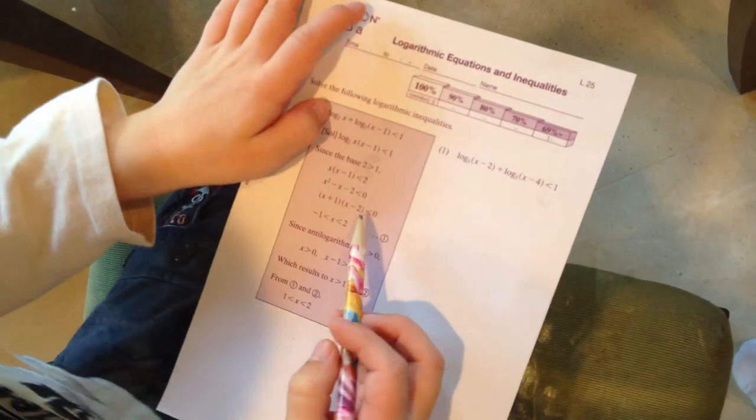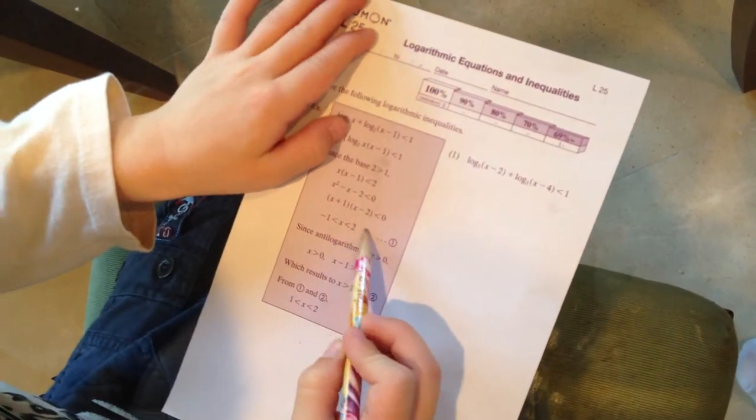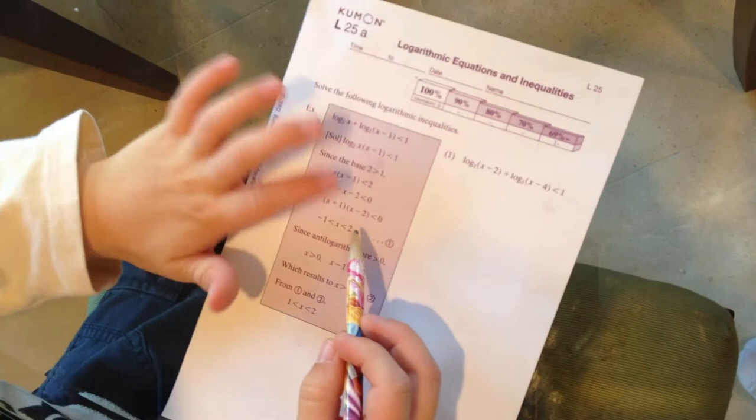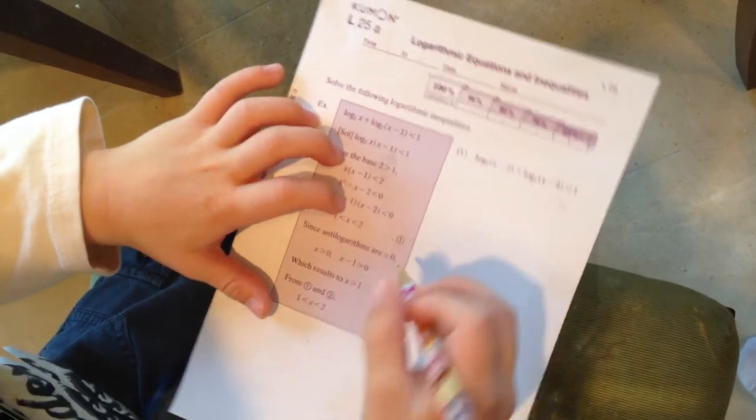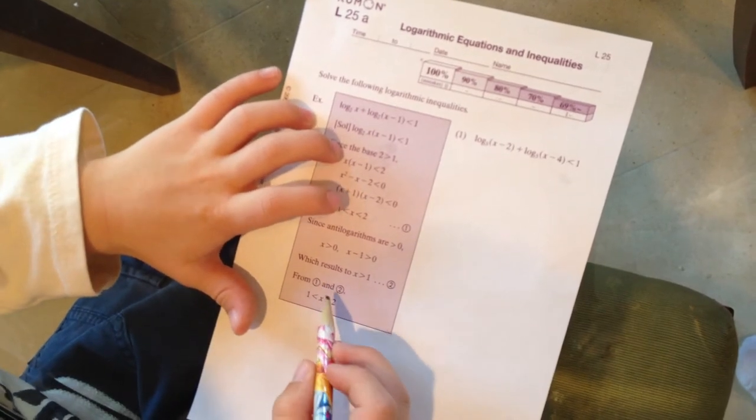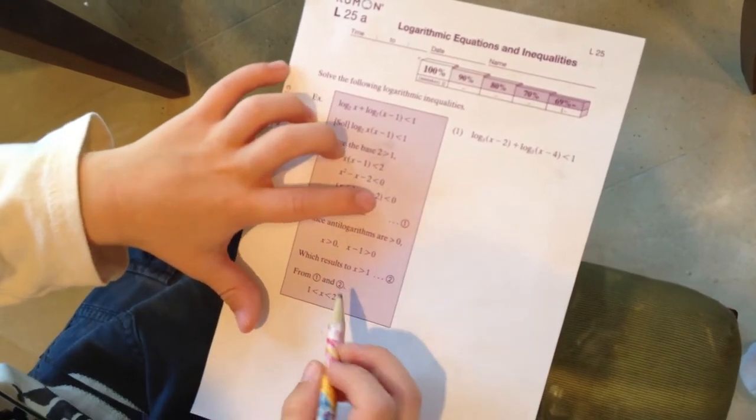So, 1 is smaller than 2, so we want before the 2, and negative 1 is smaller than 1. So replace the negative 1 with the 1, and then that becomes 1 is less than x, which is less than 2. 1 is less than x, which is less than 2. Now, I'm going to show you on a different problem.